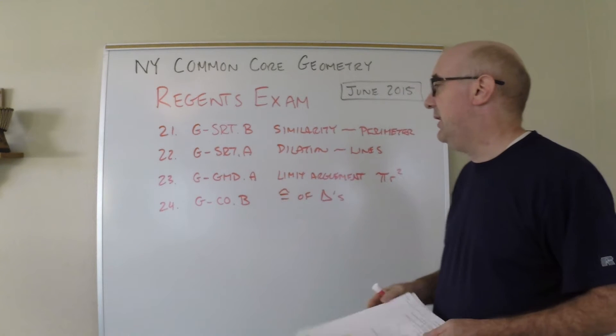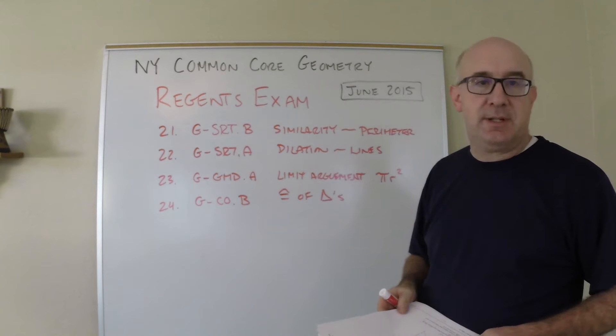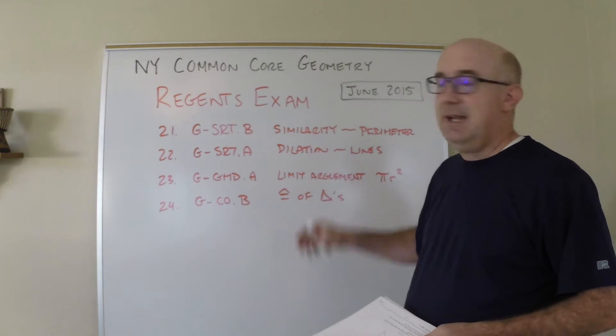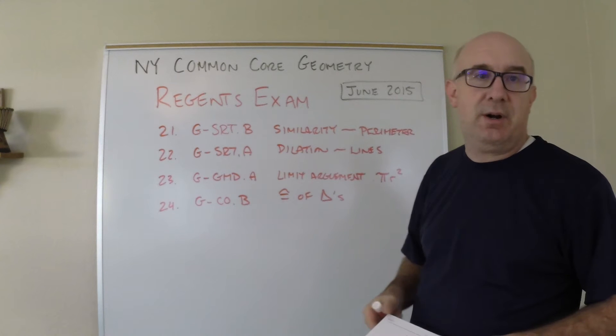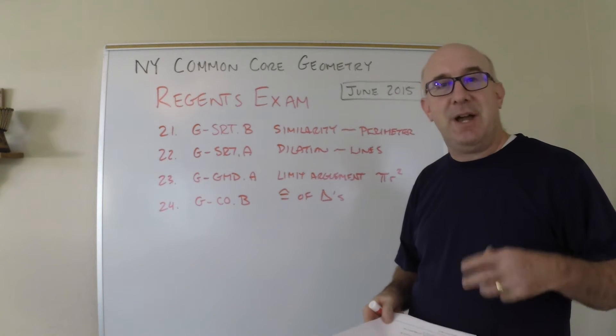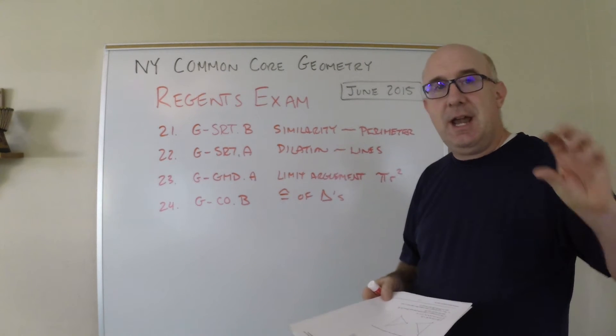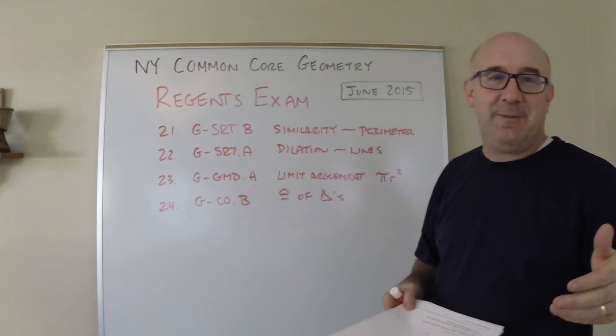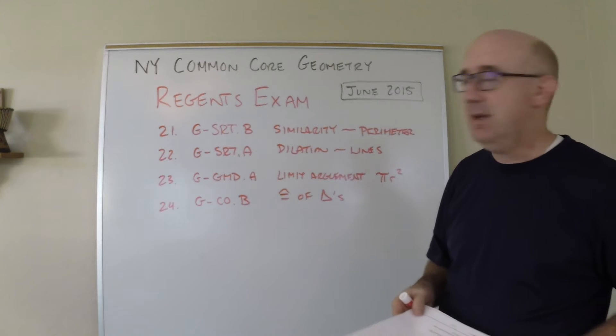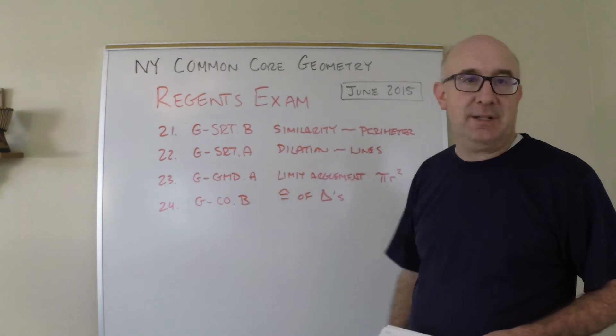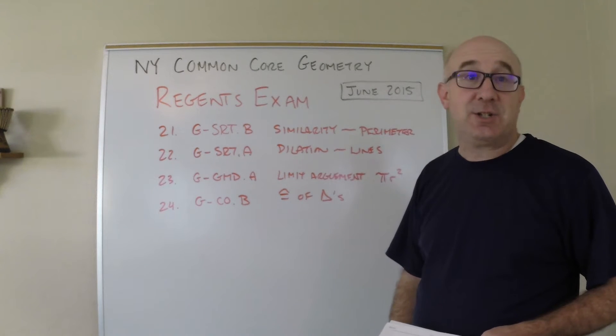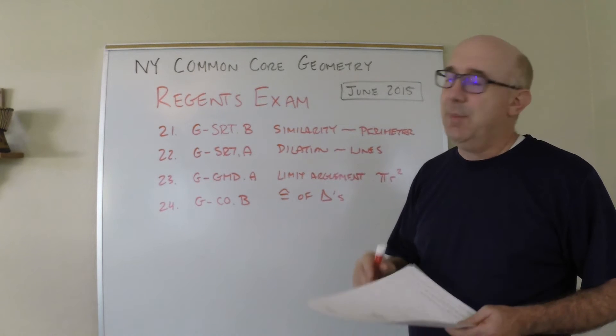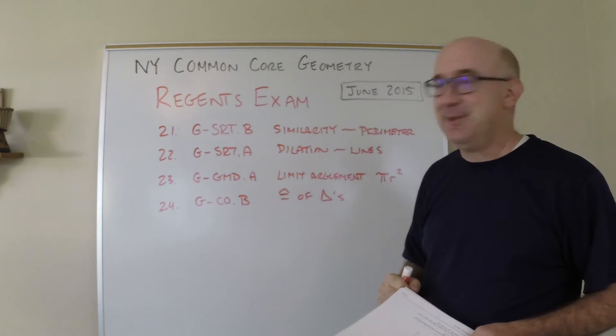In 23 we're looking at geometric measurement and we're looking at the formula for a circle pi r squared and how we can use it by cutting up into pieces and fitting them so that it makes a parallelogram, and we use the parallelogram formula to help us get the formula. We use this limit argument to go after it and it's a nice question, a classic question but once again in our materials.